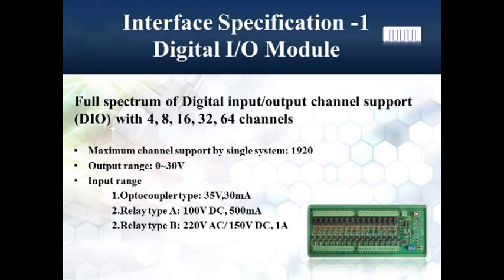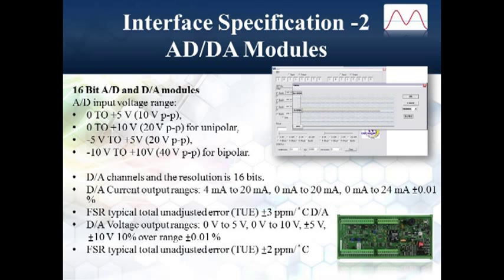Our relay type A can sustain an output of 100 volts DC at 500 milliamps. And our relay type B can sustain an output of 220 volts AC or 150 volts DC at 1 amp. Our ADDA module is available in a variety of input voltage ranges with 16-bit resolution and up to 10 volts output.